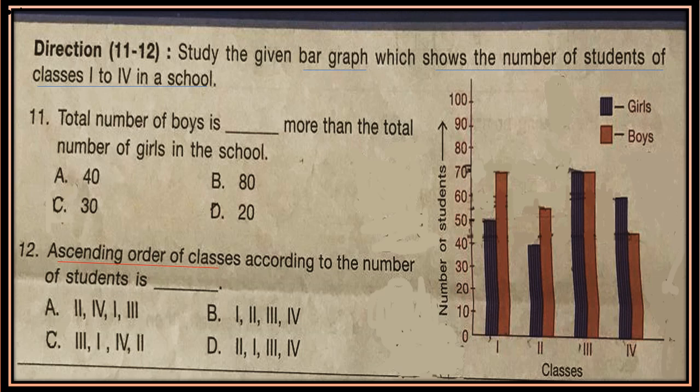Question 12: Arrange the classes in ascending order according to the number of students. Calculate the number of students in each class, then arrange the classes in ascending order accordingly.